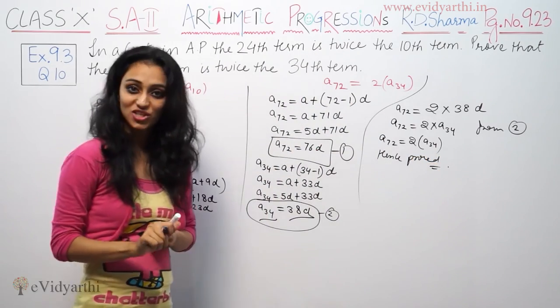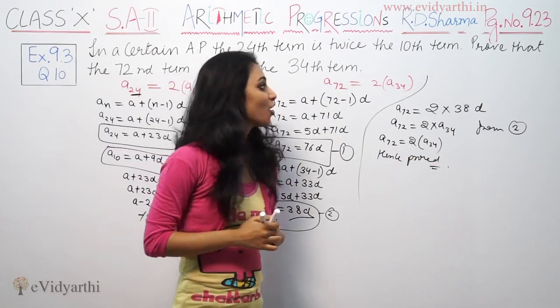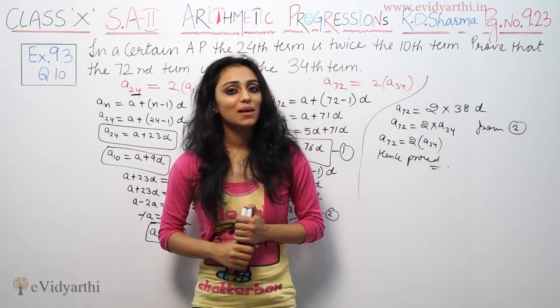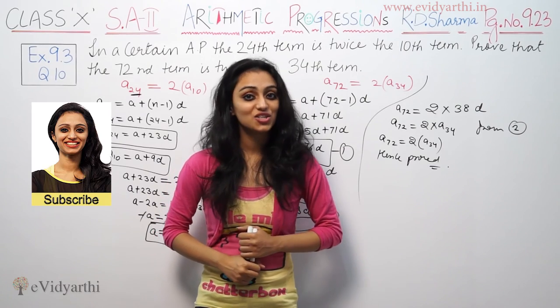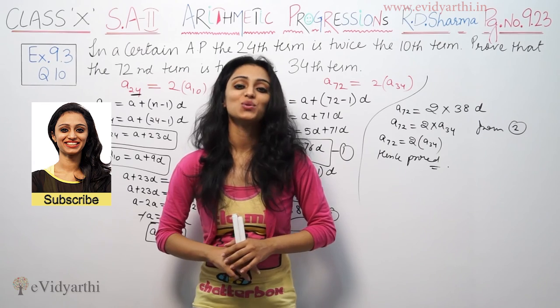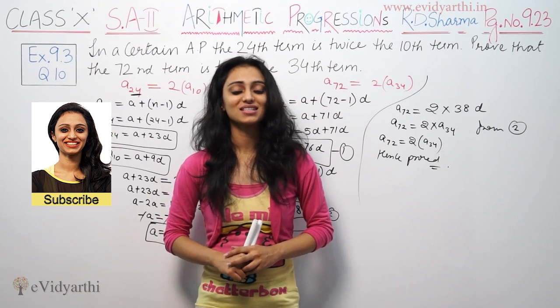So basically the question was given, we used it and proved A72 equals twice A34. This type of questions you can try with Adi Sharma. And if anyone has any doubt, please tell us and watch the next video for more questions. Goodbye.